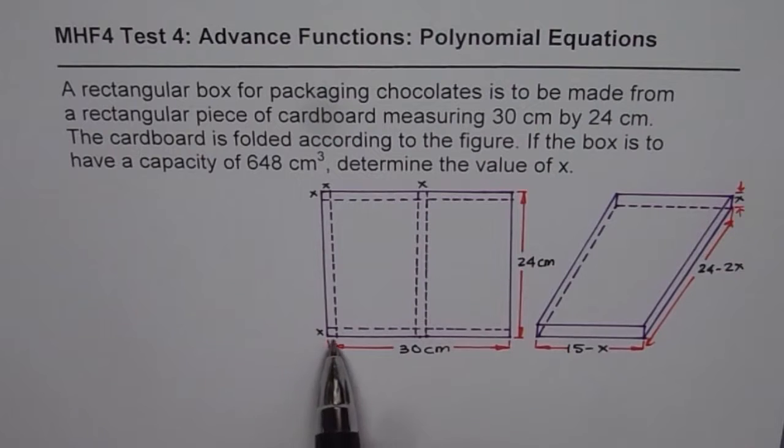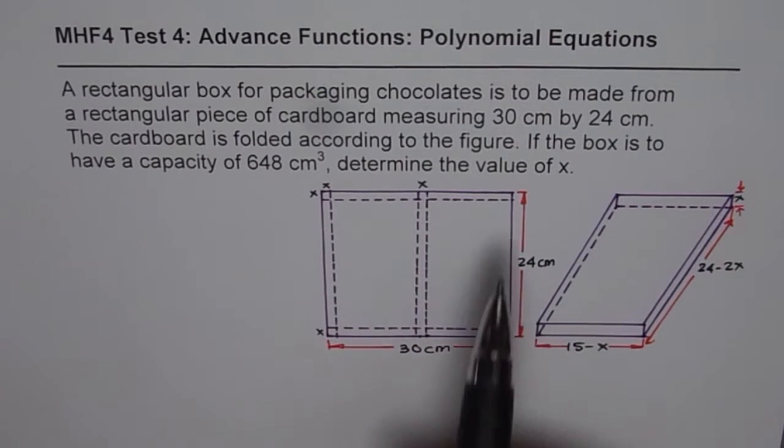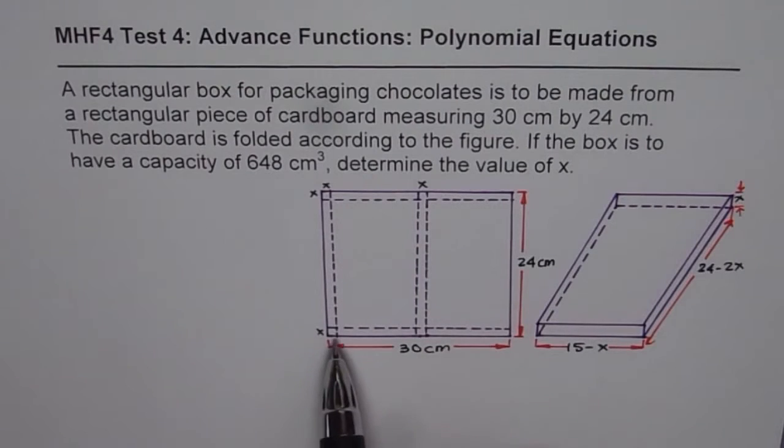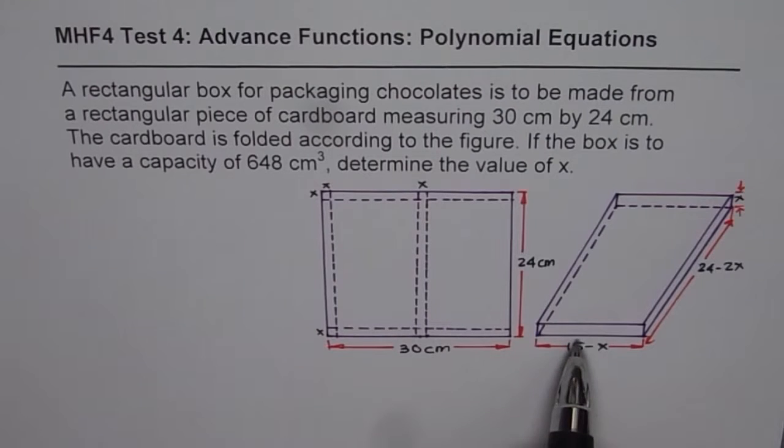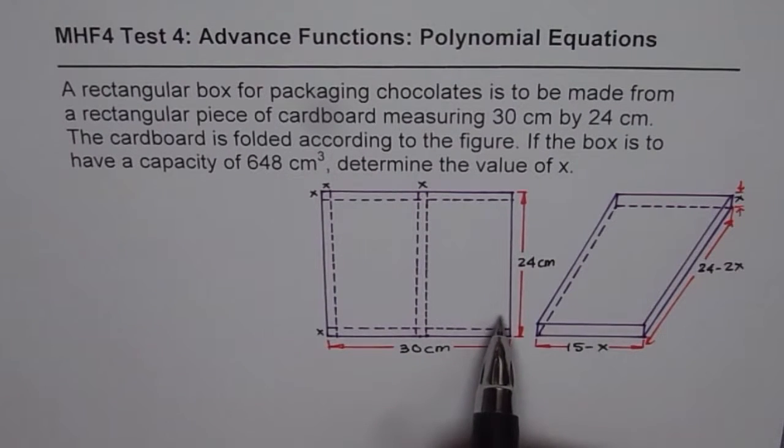So here is a cardboard, 30 cm by 24 cm. It is folded along these dotted lines. It's kind of a covered box as shown here on the right side. Now when you fold it, it's bent from here so the height is x and then you bring this side over to the right side.